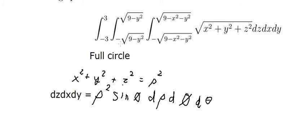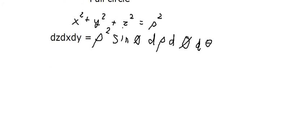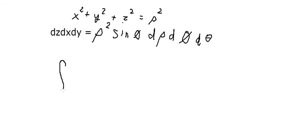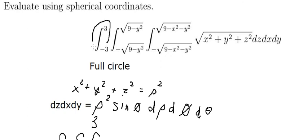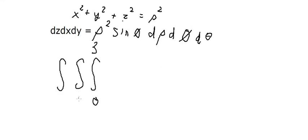Now we need to change the boundary. That should be from 0 to number 3, because that is the radius of the circle. From 0 to pi, and from 0 to 2 pi.